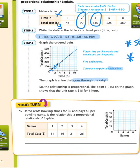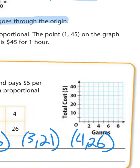Let's do number 1 together. Jared rents bowling shoes for $6 and pays $5 per bowling game. Is the relationship a proportional relationship? Well, let's look at each pair and plot it and see if it meets our criteria. So our first pair looks like it's going to be at 1, 11. Our second pair will be at 2, 16, 3, 21, and 4, 26. So now I'm going to plot those points. 1 is at 11, 2 is at 16, 3, 21, 4, 26.